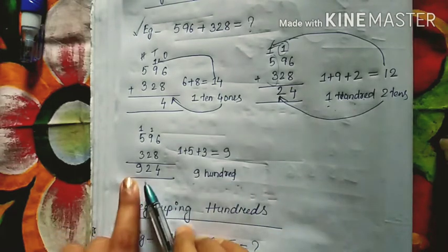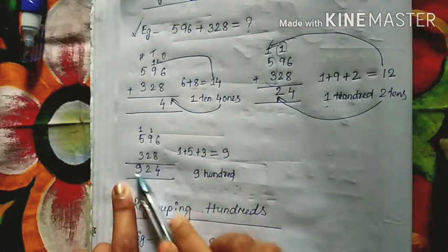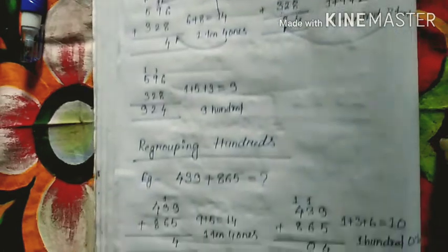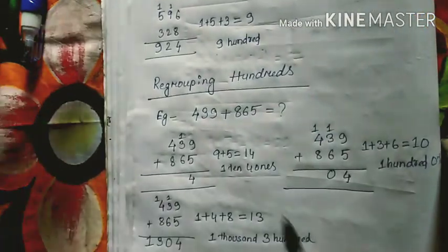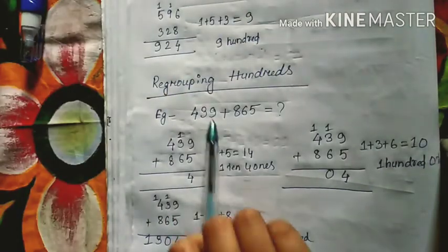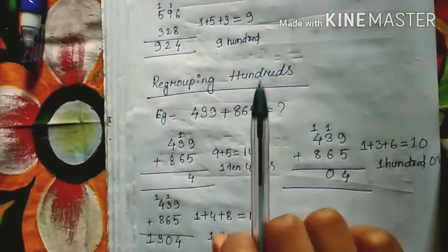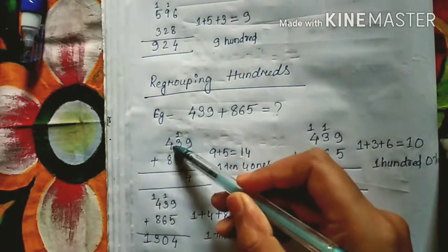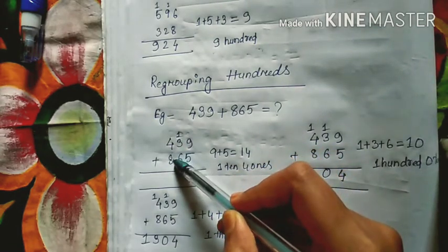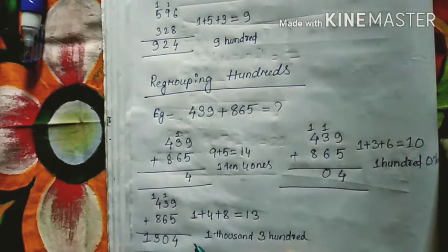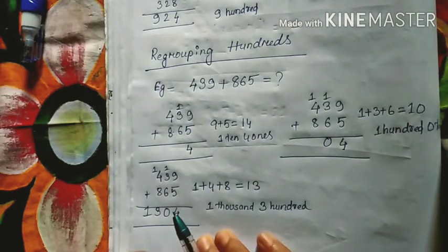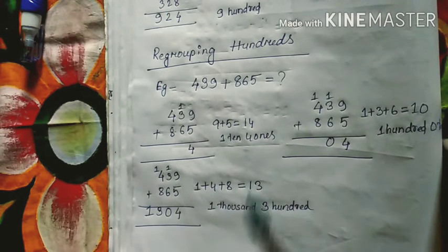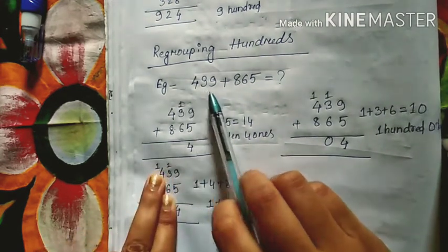Since it is only 9, there is no carry, so this is the end of your answer and you will get 924. Now, how will we do regrouping of hundreds? That means when we are regrouping hundreds, we will get a new term as well. Let's see — it happens when the sum is more than 9.